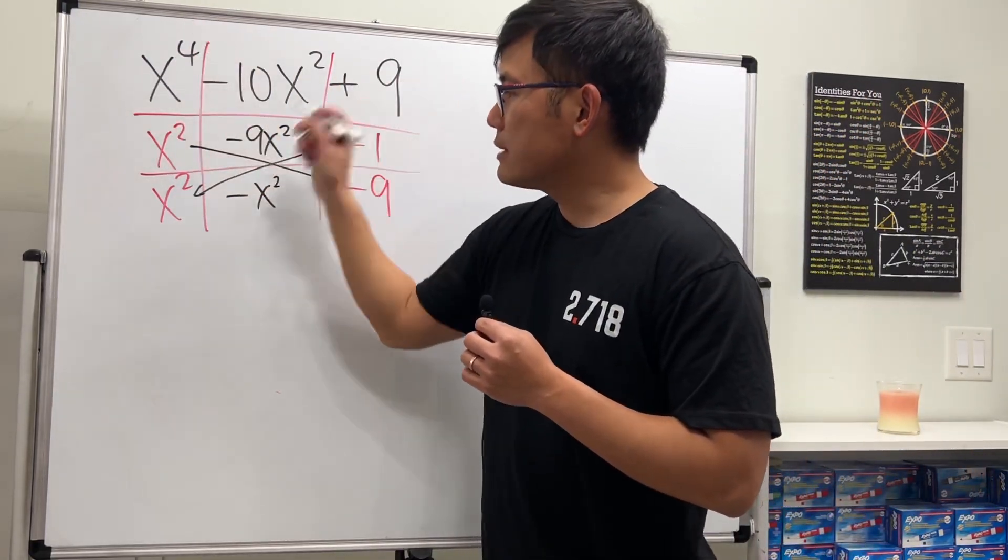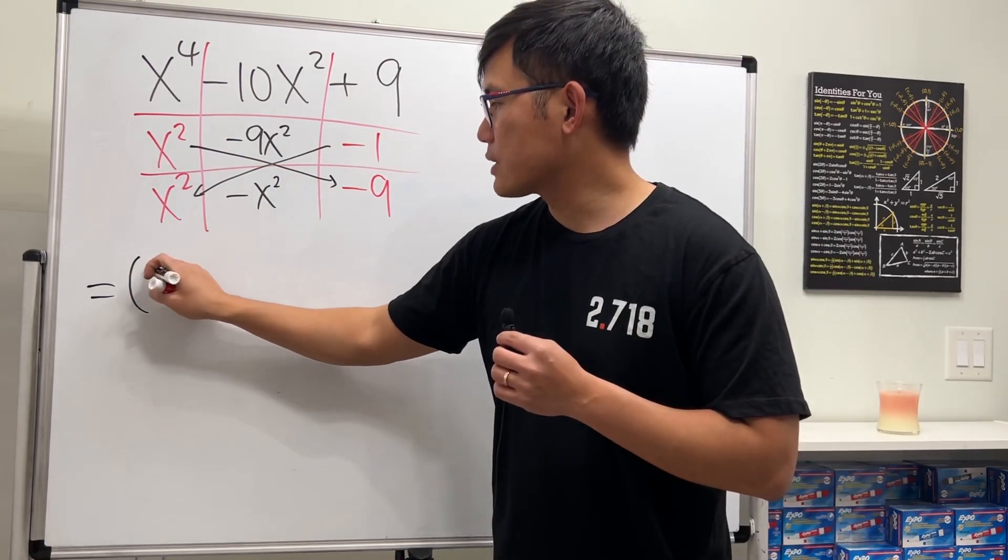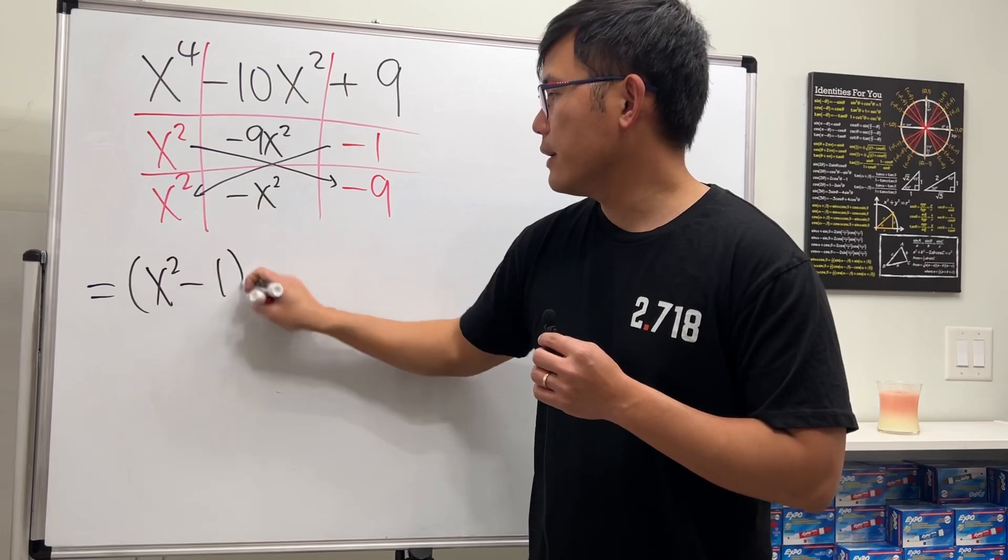That means this right here gives us this minus that, so we have x squared minus 1, and then this minus that which is x squared minus 9.